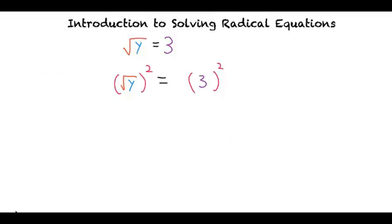The square of a square root leaves us with what is inside, which is y in this case, and 3 squared is 9. So our final answer is y equals 9.